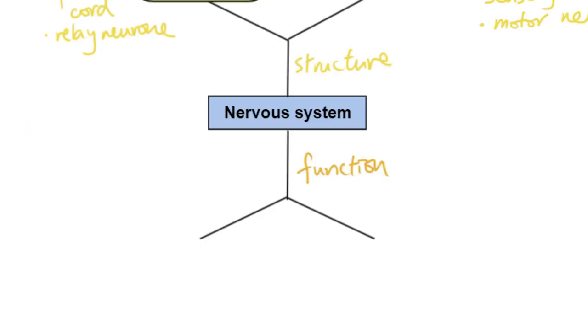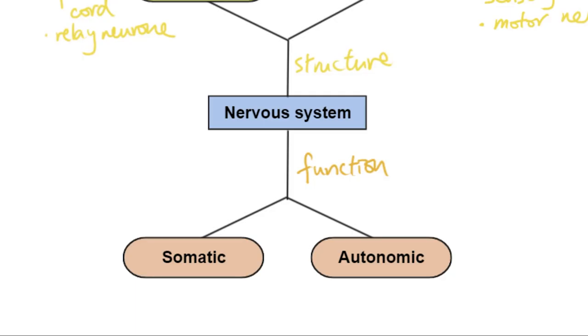Another way to consider the nervous system is based on its functions. First of all, we can split it into two major groups, which is the somatic nervous system or the autonomic nervous system.